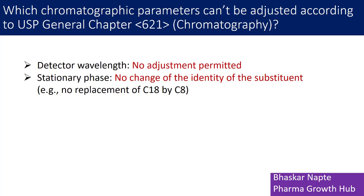The reason this chapter does not allow a change in stationary phase is that such a change can bring a change in the order of elution, change in retention time, and change in selectivity — which is a very significant change. This may mislead you into wrongly identifying a compound. Your relative retention time and relative response factor can get changed, which can further lead to errors during quantification. For that reason, the stationary phase cannot be changed.